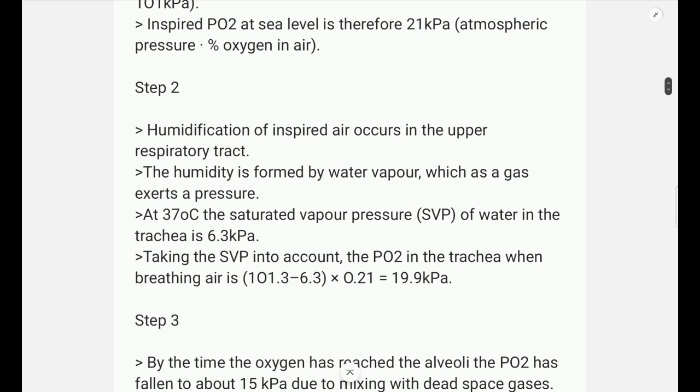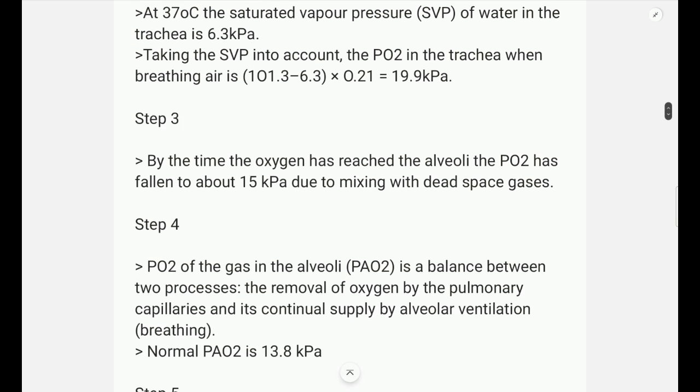Now when this atmospheric air reaches the trachea it gets humidified. And because of humidification there is entry of water vapour into this air. This water vapour has a saturated vapour pressure of 6.3 kPa at 37 degrees Celsius. Now while calculating the partial pressure of oxygen, we will subtract this 6.3 from the 101 atmospheric pressure and we will get a value of 19.9 kPa.